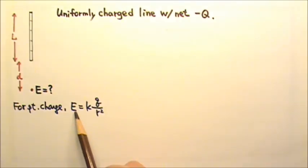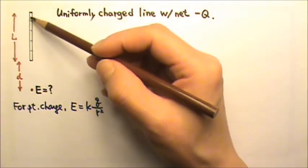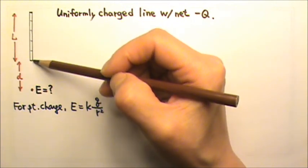We know how to find the electric field produced by a point charge. We use Coulomb's law, E equals kQ over R squared. But this is not a point charge, so what do we have to do?